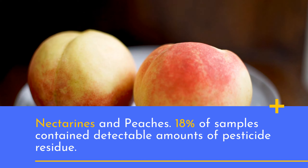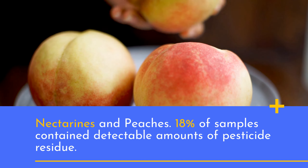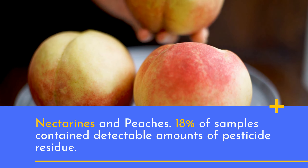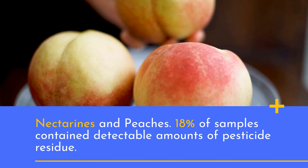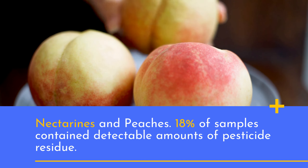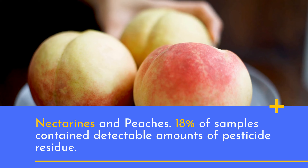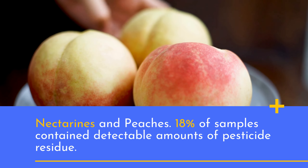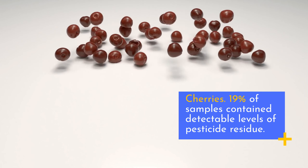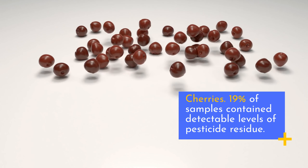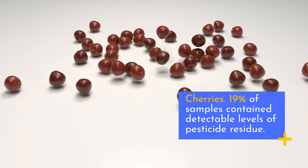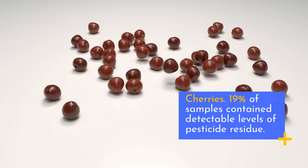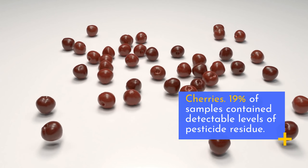Nectarines and peaches: 18% of samples contain detectable amounts of pesticide residue. Cherries: 19% of samples contain detectable levels of pesticide residue.